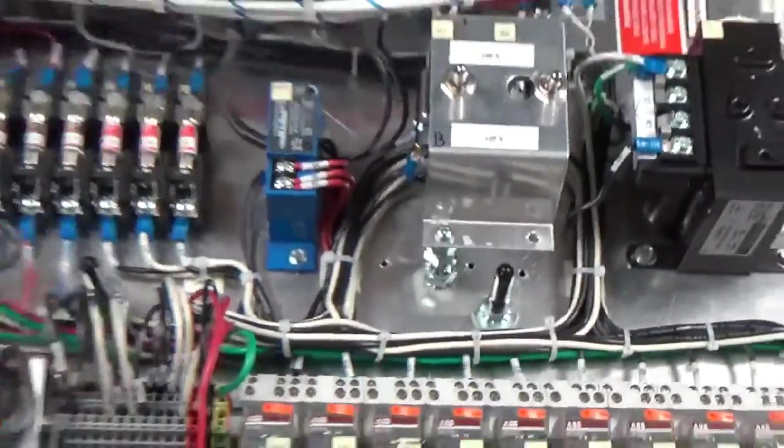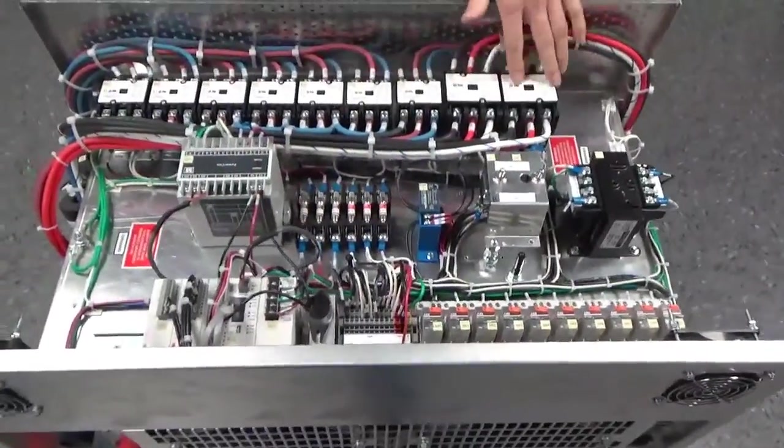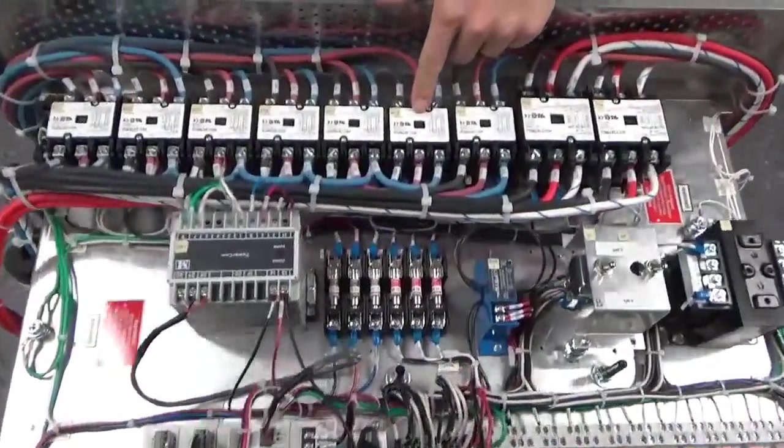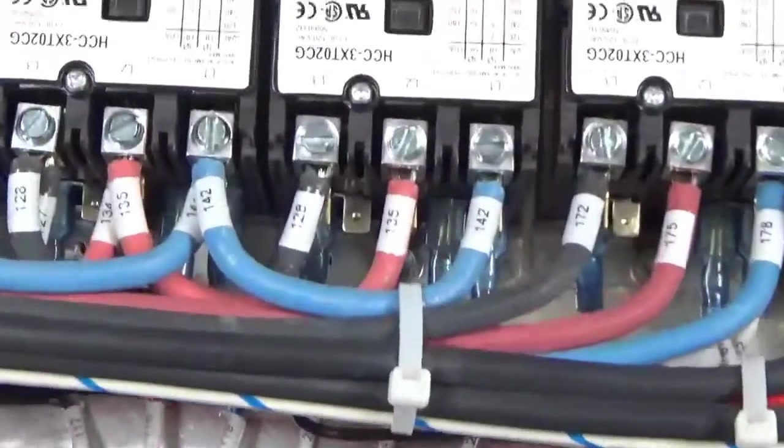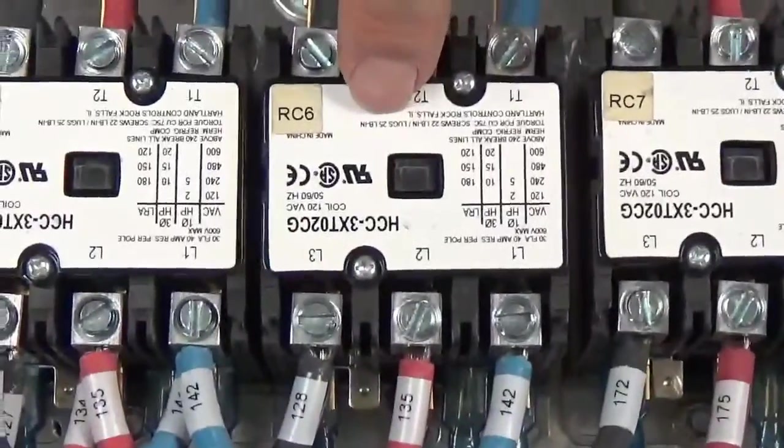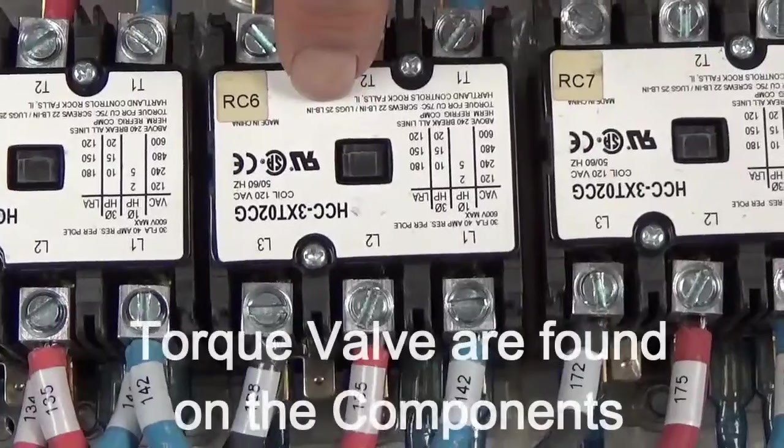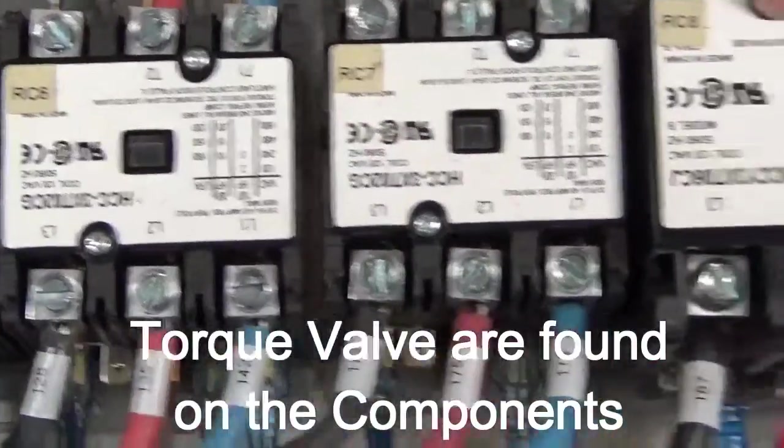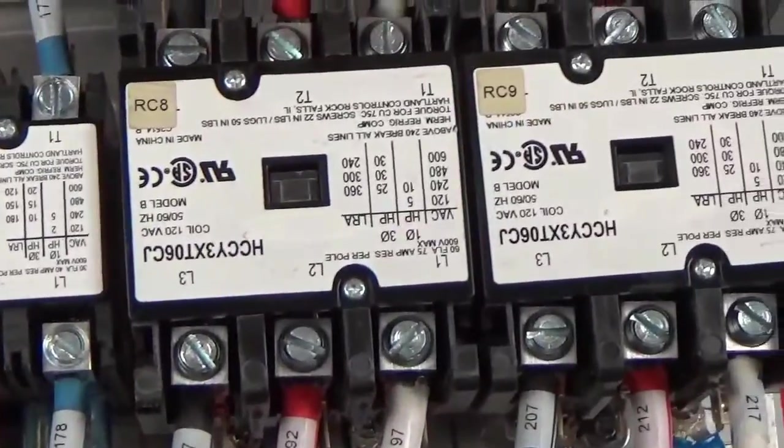All these components do have a torque value. The contactors have their torque value listed right on the contactor itself. For instance, these have a lug of 25 inch-pounds. These larger ones here are going to be 50 inch-pounds.